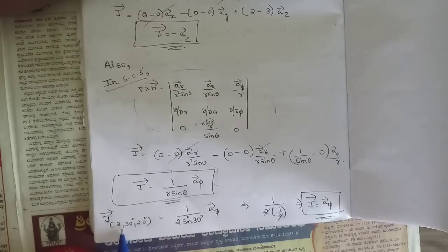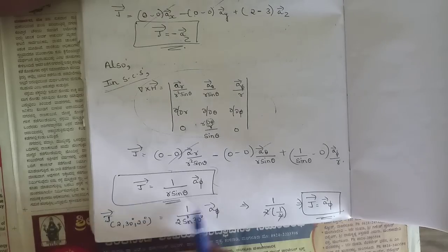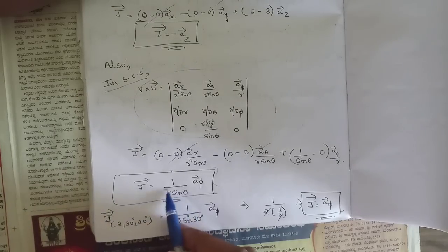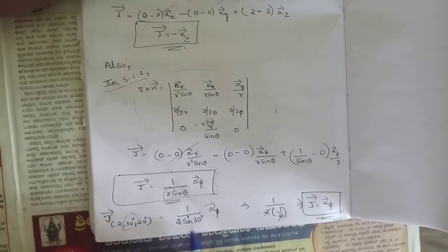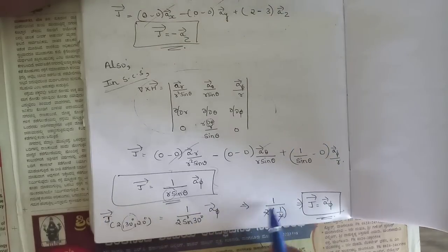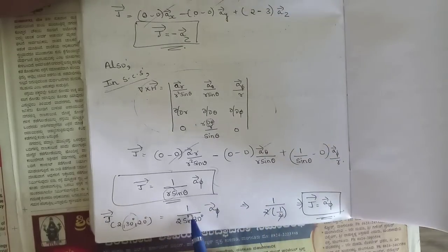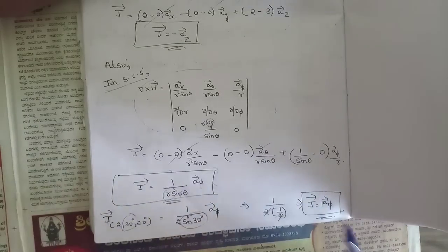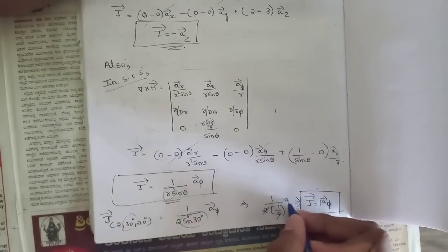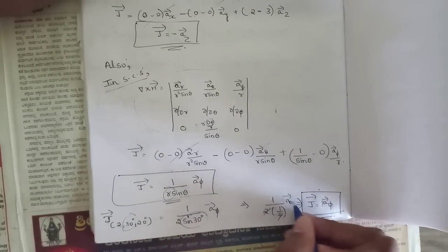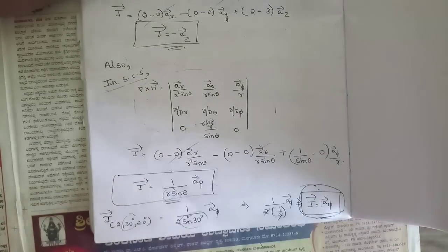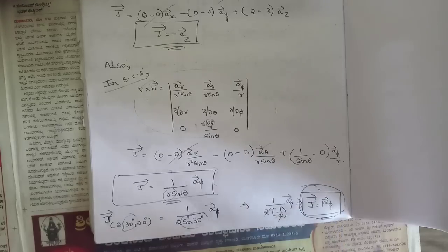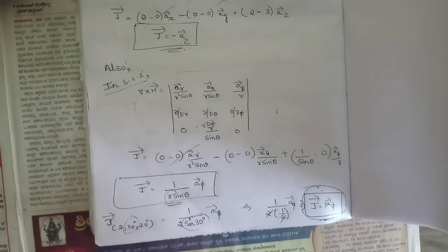At point (2, 30°, 20°): J = 1/(r sin²θ) aφ = 1/(2 · sin²30°) aφ = 1/(2 · (1/2)²) aφ = 1/(2 · 1/4) aφ = 1/(1/2) · ... simplifying: sin30° = 1/2, so 2 × (1/2) = 1, giving J = aφ A/m².